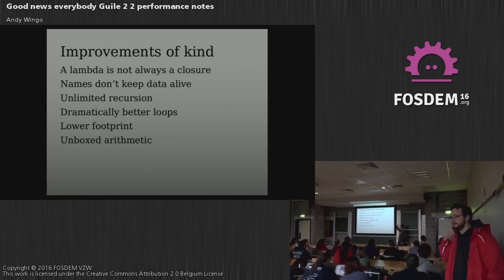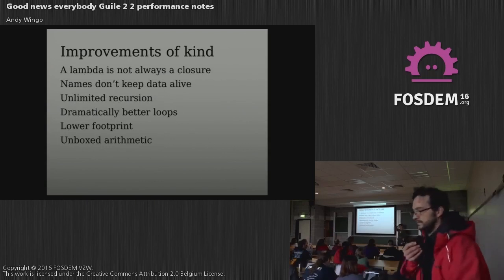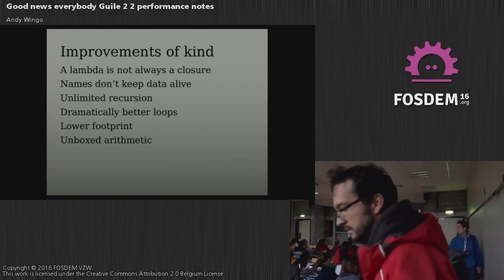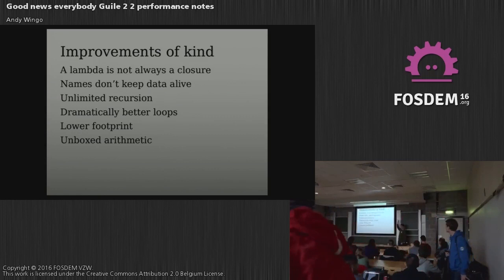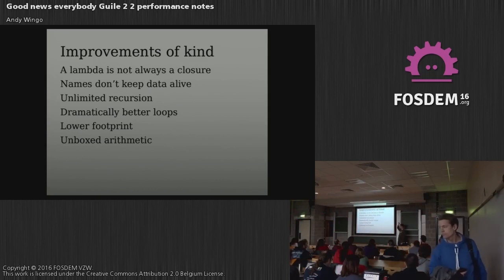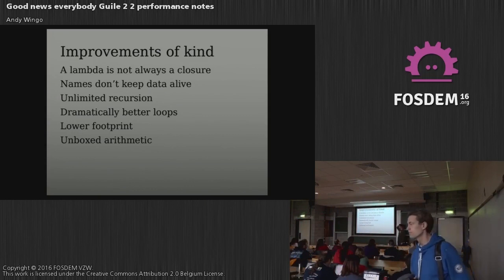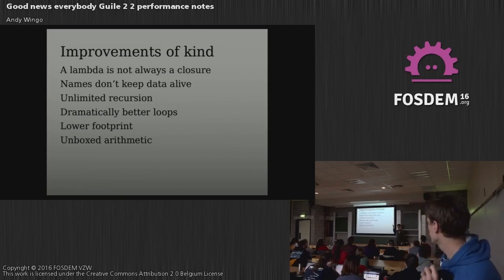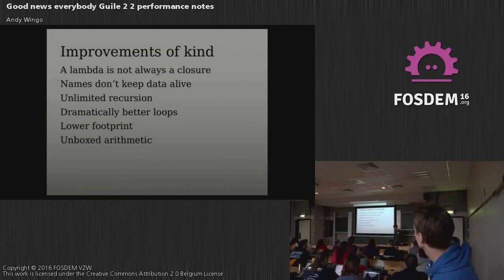There are many improvements of degree, but the ones I'm going to focus on are the improvements of kind — improvements such that you might consider writing or understanding your program in a different way once you know these bits. Here they are: first, lambda is not always a closure; names don't keep data alive; we can do unlimited recursion; Guile does dramatically better loop compilation; it has a lower footprint; and it does unboxed arithmetic.